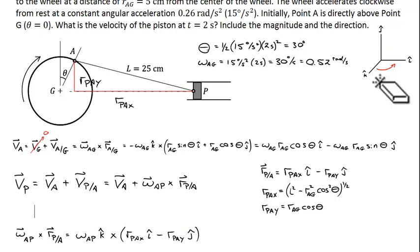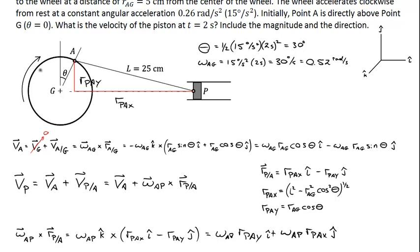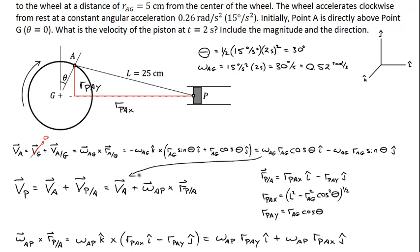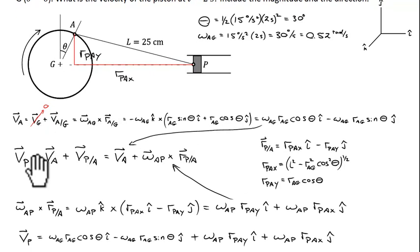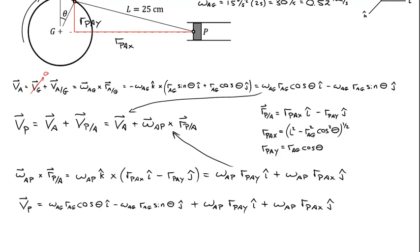Crossing k-hat with j-hat gives a value in the negative i-hat direction. Crossing the two vectors gives omega AP times RPAy in the i-hat direction plus omega AP times RPAx in the j-hat direction. Combining everything, the velocity of P has potential components in both i-hat and j-hat. But we know there can be no velocity in the j-hat direction — that's our constraint. So VP equals some scalar VPx in the i-hat direction plus zero in the j-hat direction. It can only move horizontally.